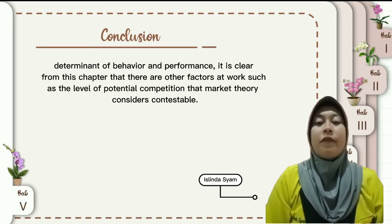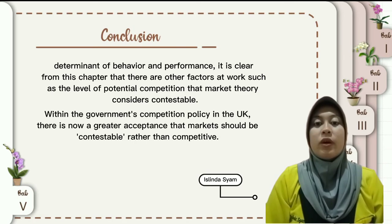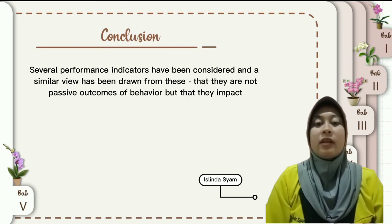It is clear from this chapter that art and factors at work, such as the level of potential competition, are what market theory considers within the context of government. The competition policy indicates there is no greater expectation that markets should be contestable rather than competitive. Several market indicators have been considered and a similar view has been drawn from this analysis.